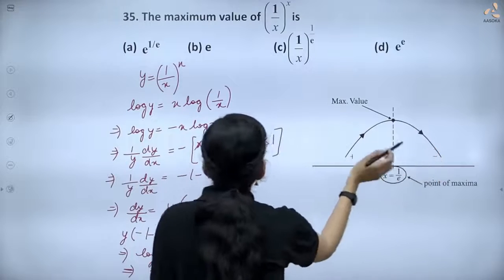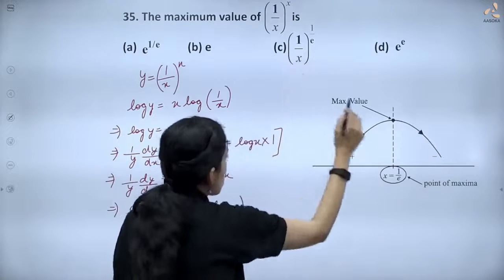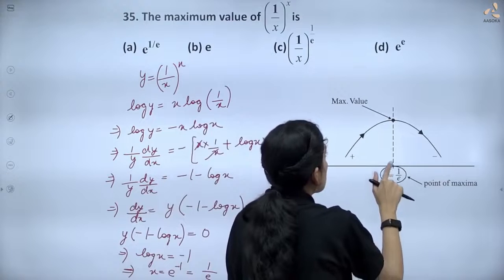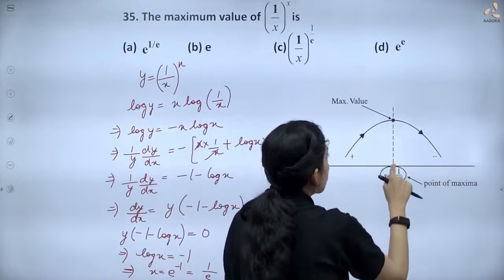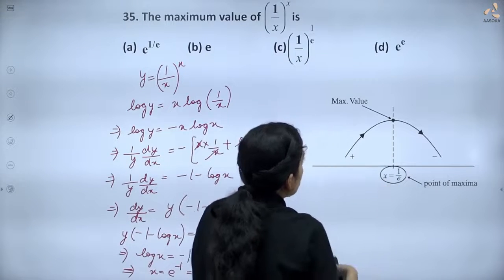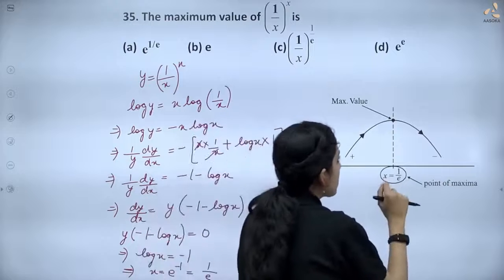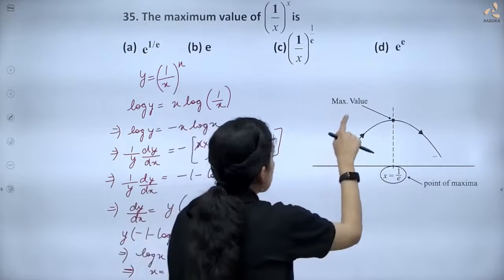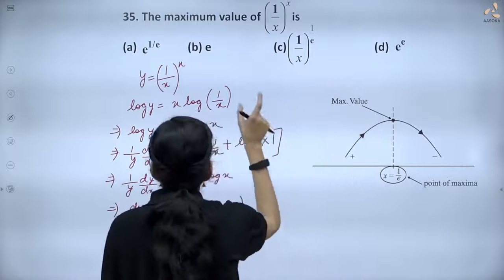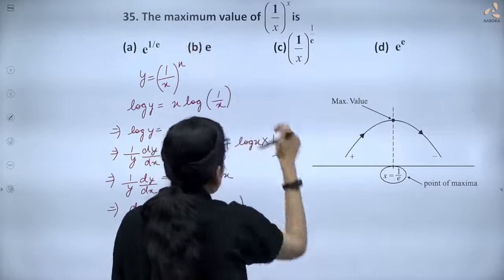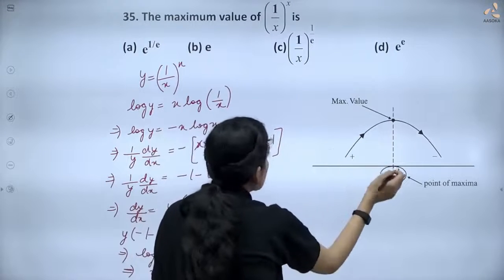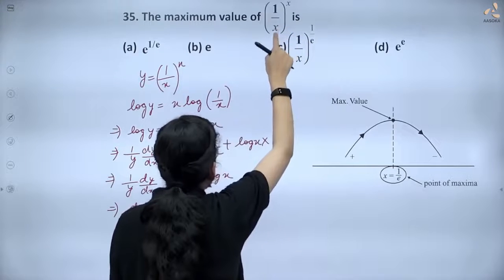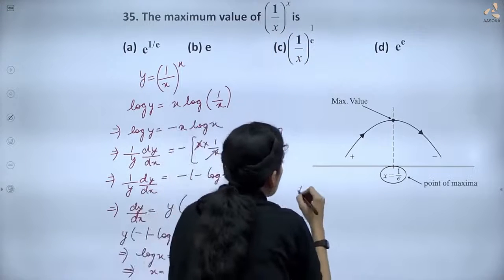From the graph of this function, we can see that at x = 1/e we are getting the maximum value — this is the point of maxima. So let us put x = 1/e into the function to find the maximum value.